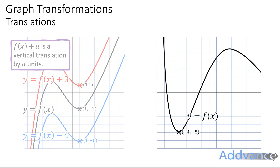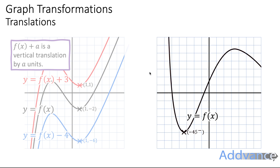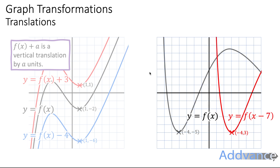Here we have y equals f of x with a different curve, and we're focusing on the coordinate (-4, -5). Now we're going to look at subtracting or adding inside the bracket. So f of x minus 7, when the minus 7 is inside the bracket, moves it to the right by 7 squares.